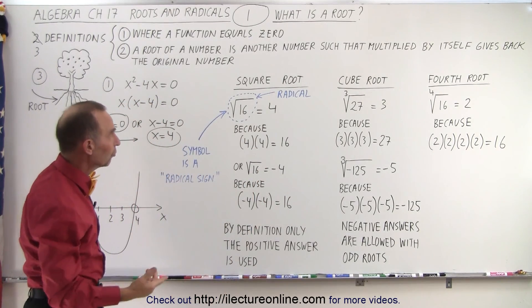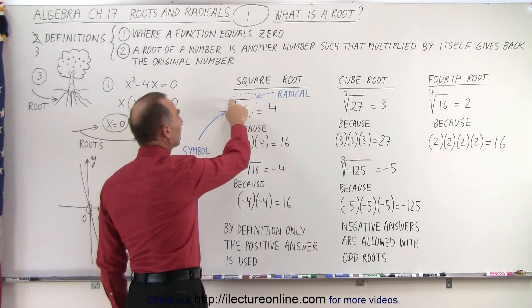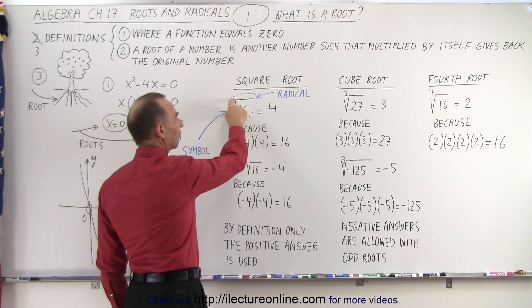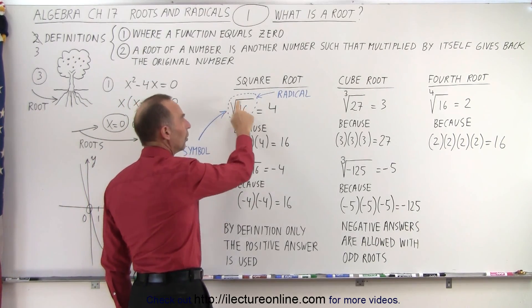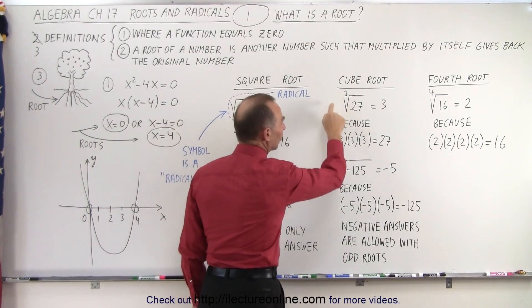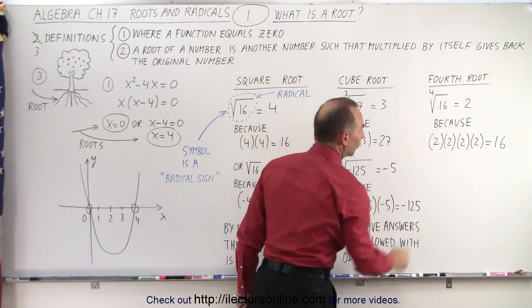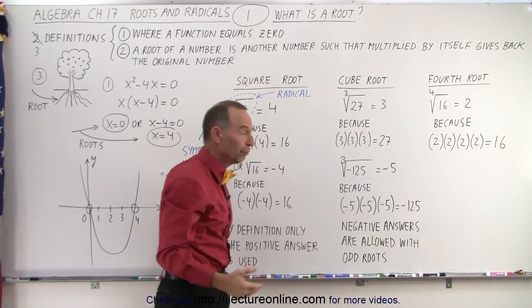The different kinds of roots can be seen by putting a number up here. If we have a 2 there, we don't have to write it. But if it's a cube root, we have to write a 3. If it's a fourth root, we have to write a 4, and so forth.